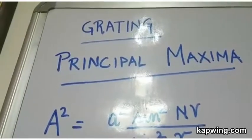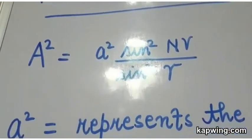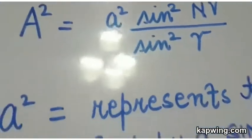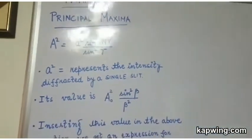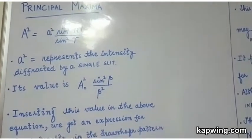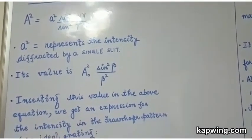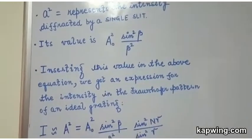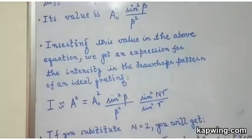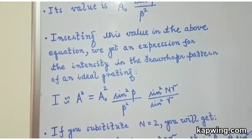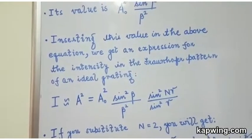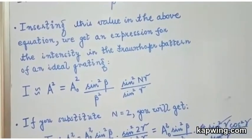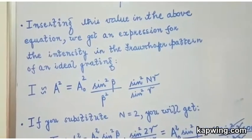Next segment of grating we will discuss the principle maxima. As you can see I have written the expression for the amplitude square given by sin square n gamma upon sin square gamma. Now in this case A square represents the intensity diffracted by a single slit. Its value when we substitute is given by A0 square sin square beta upon beta square. If we substitute this value in the above equation we get an expression for the intensity in the Fraunhofer pattern for an ideal grating and it comes out to be I is equal to A square. Now this is approximately A square because the intensity is proportional to the square of the amplitude not directly equal to it. But A square is given by A0 square sin square beta upon beta square sin square n gamma upon sin square gamma.